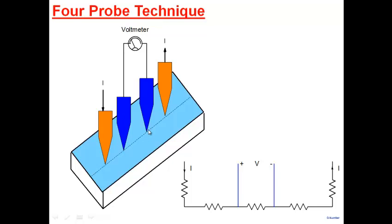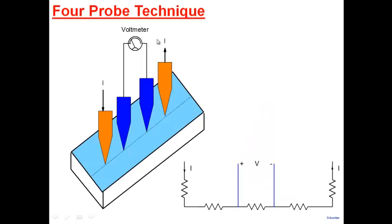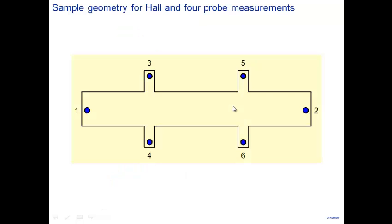Using correction factors to account for current flow geometry, you can estimate resistivity. The four-probe technique is one of the most popular methods for measuring resistivity of silicon or other semiconductors. It is more accurate because you force current through outer probes and measure voltage between the inner two, removing contact resistance effects.